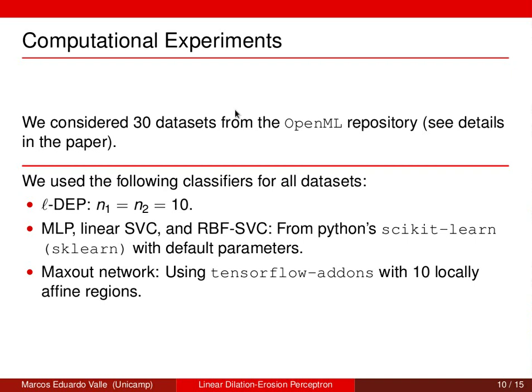Let us now describe the computational experiments. We consider several datasets from the OpenML repository — see details in the paper. We use the following classifiers for all datasets: an L-DEP with n1 and n2 equal to 10, an MLP, a linear support vector classifier, and an RBF support vector classifier, all from Python scikit-learn with default parameters. We also consider the maxout network implemented using TensorFlow Add-ons with ten locally affine regions, which is structurally very similar to the L-DEP classifier.